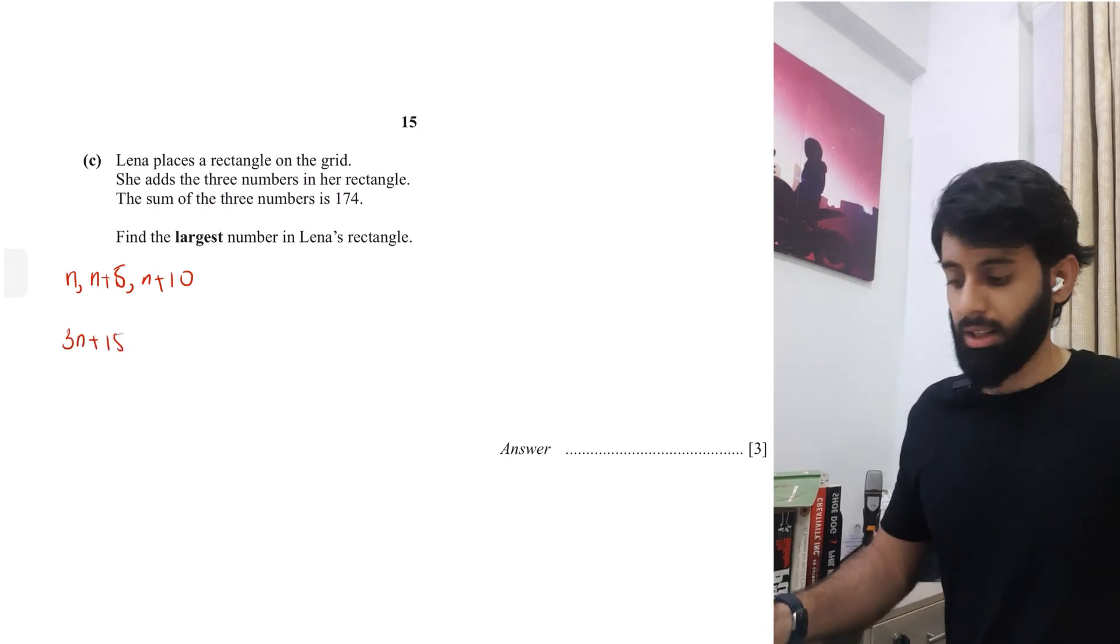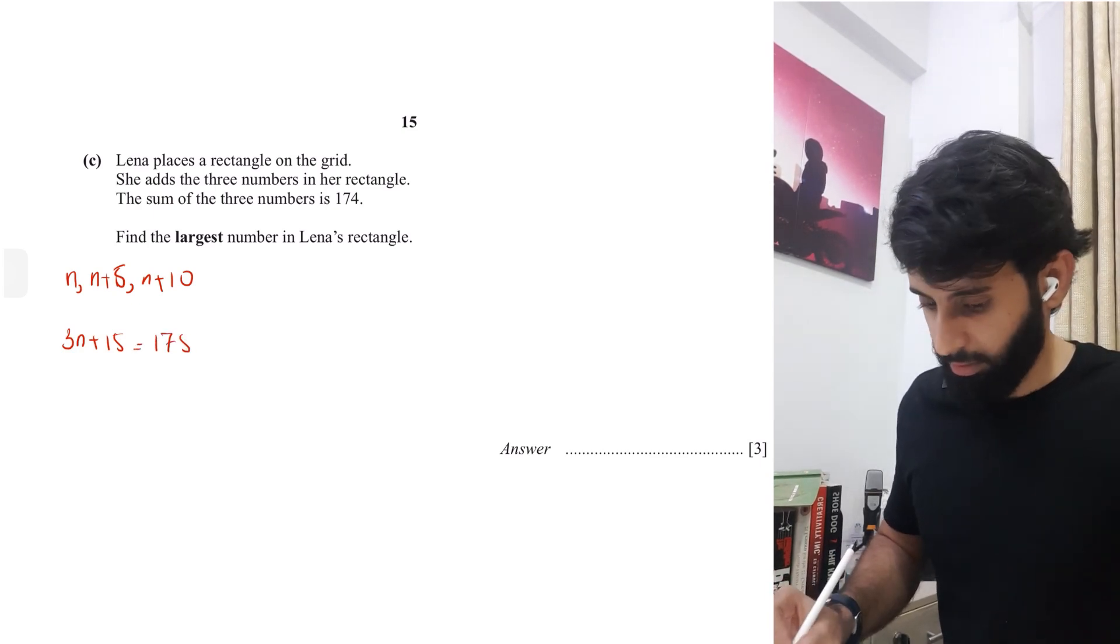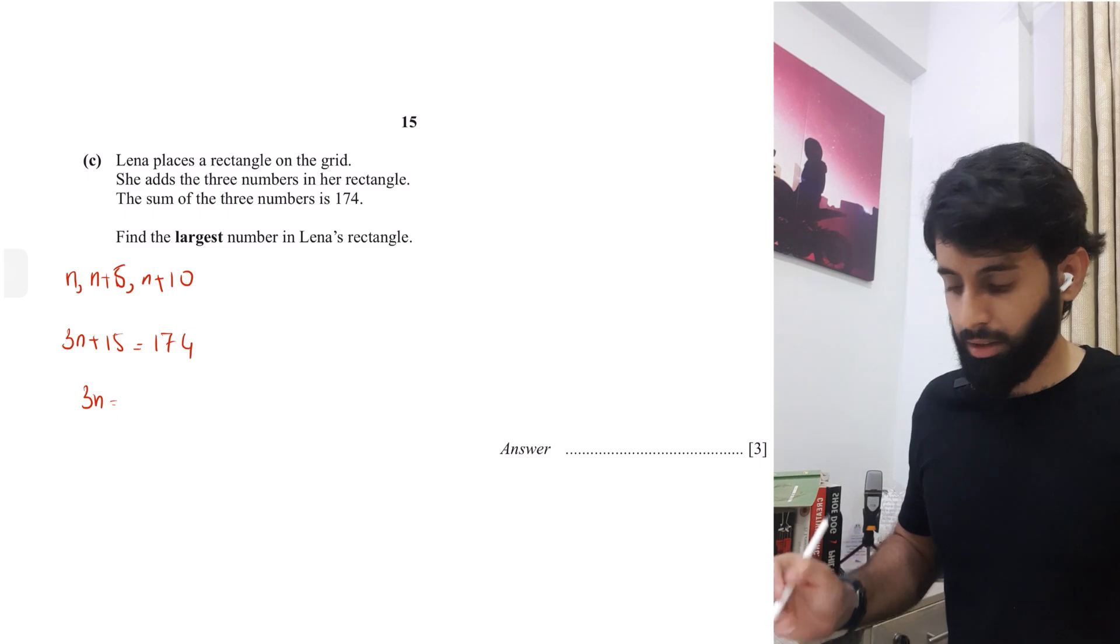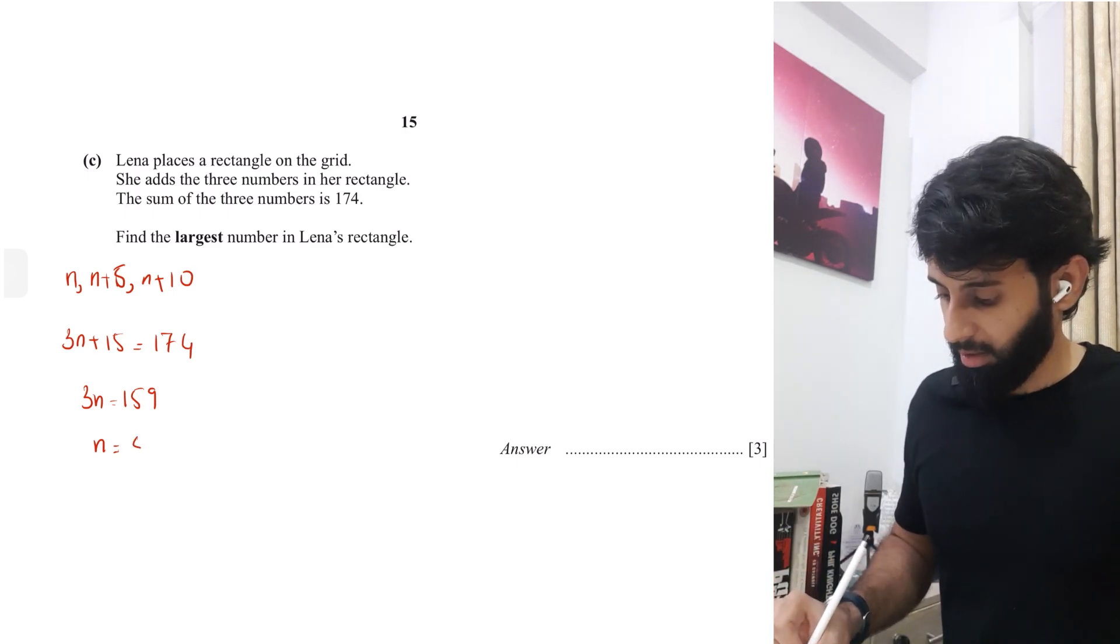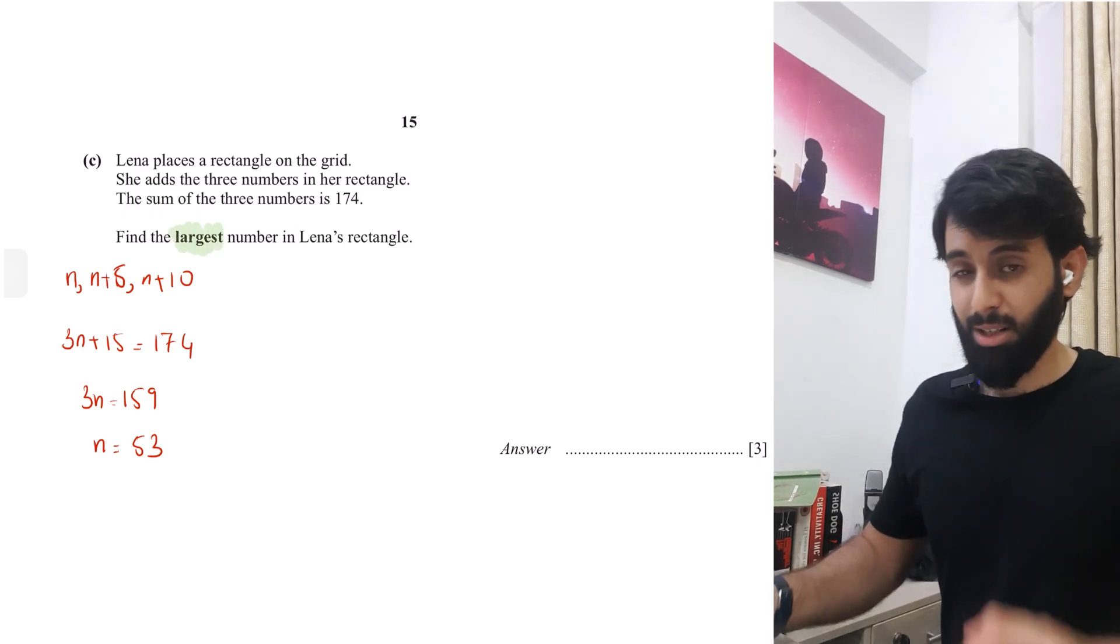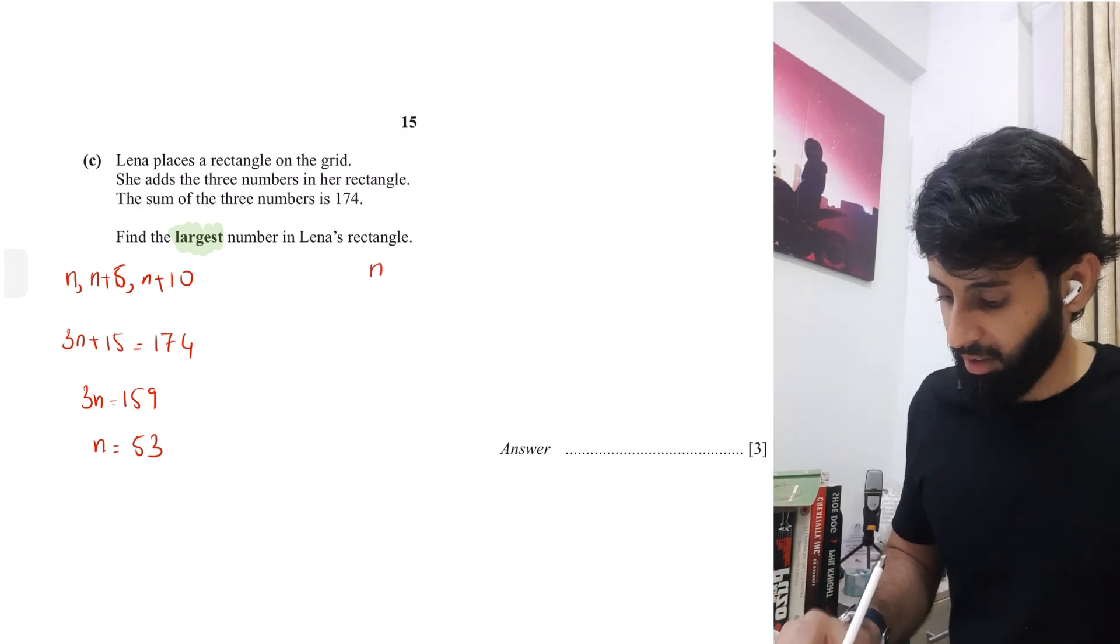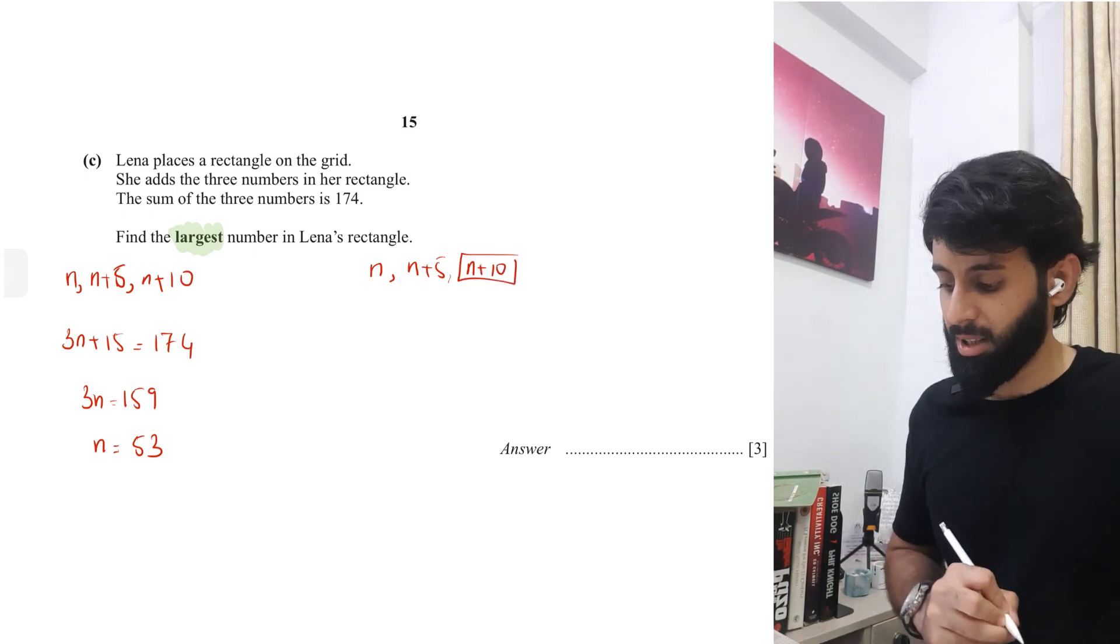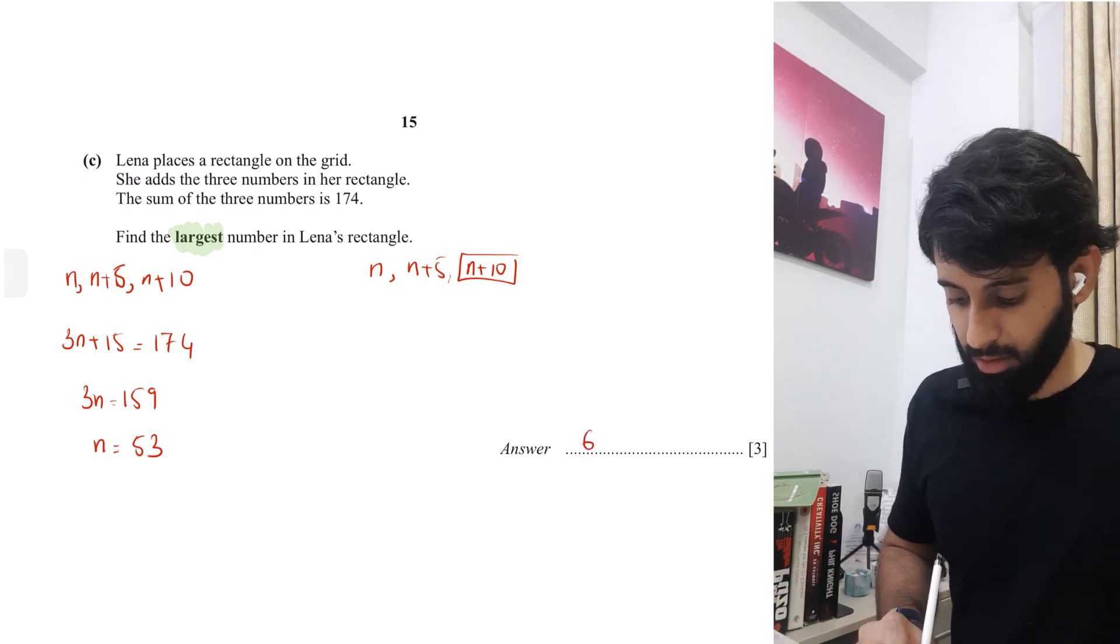So 3n equals, 174 minus 15 is basically 159. Now let's work out the value of n by simply dividing our result by 3. Now n equals 53 but again do not get carried away, see that the question is asking the largest number. It's written the word largest in bold letters. That means you got to pay close attention to it. So the largest of the three we know is not going to be n, it's not going to be n plus 5, it is in fact going to be n plus 10. So what's n plus 10? That means we're simply going to replace n with 53 so 53 plus 10 equals 63.